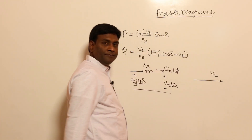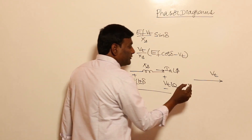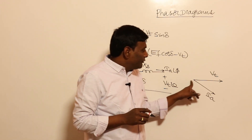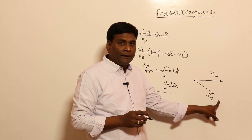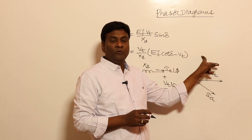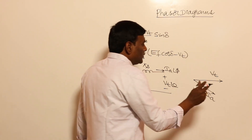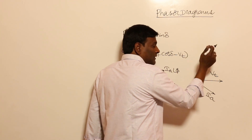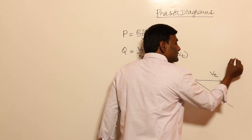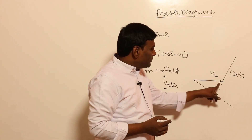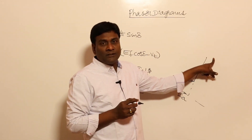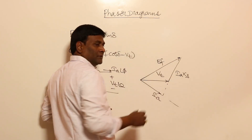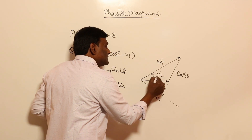For example, if Vt is like this and the current Ia is lagging, then Ia will be like this. Now Ia·Ra is in line with Ia, and Ia·Xs is 90 degrees leading with respect to current. Since resistance is not considered, Vt + Ia·Xs gives us Ef — where Ia·Xs will be 90 degrees to Ia. The length of Ia·Xs should be more compared to armature resistance, since the X/R ratio of an alternator is very high. So this resultant is going to be Ef.